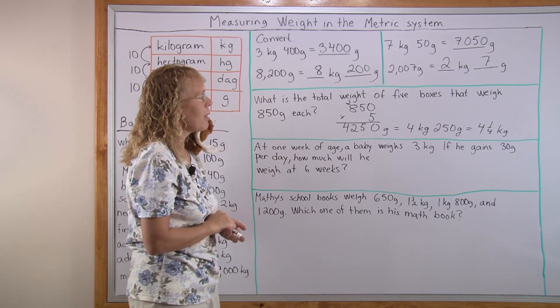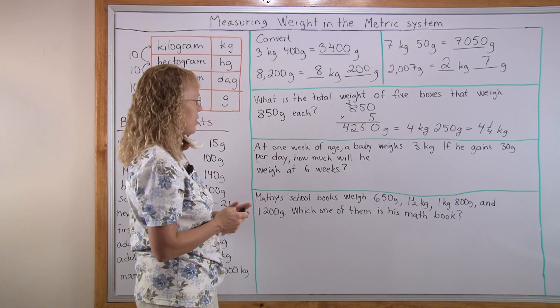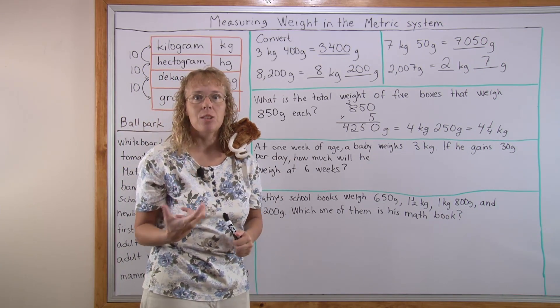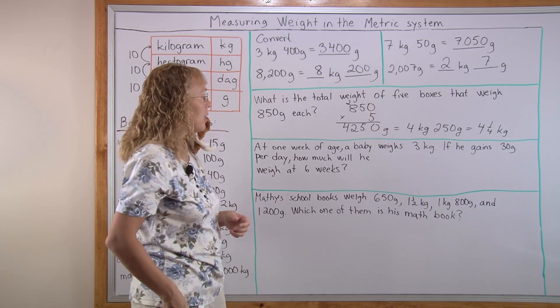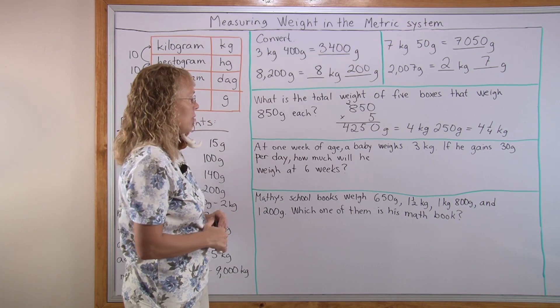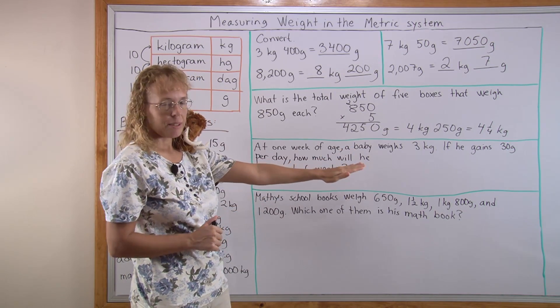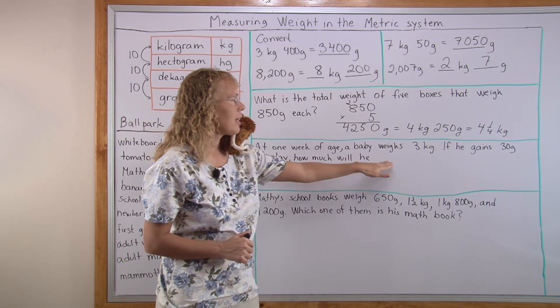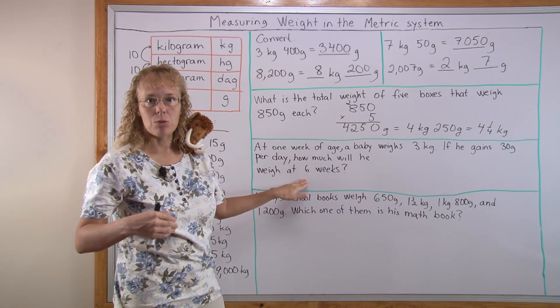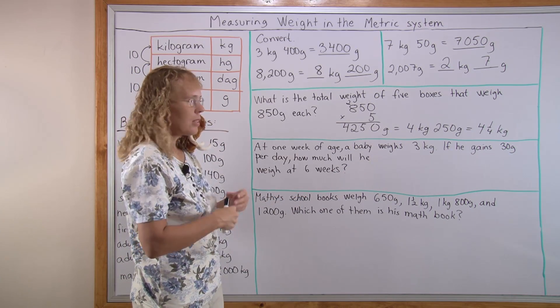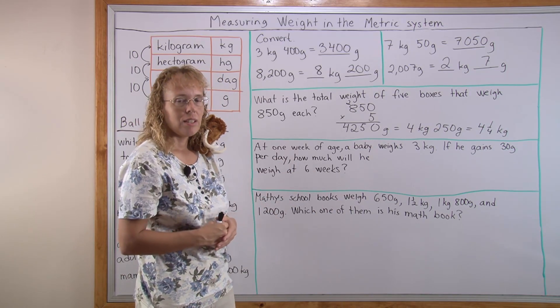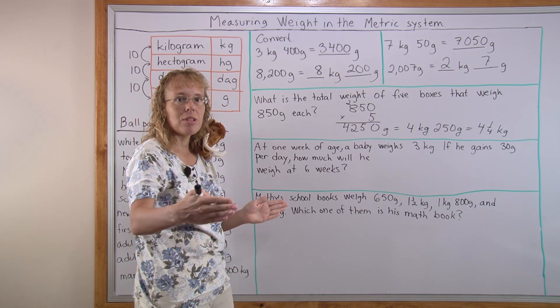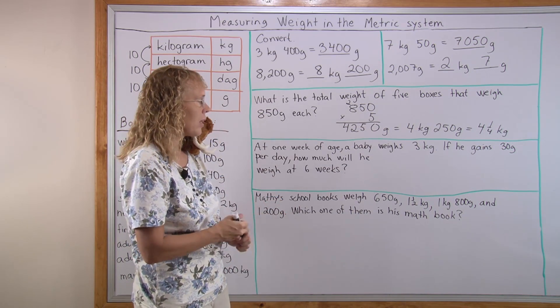At one week of age, a baby weighs 3 kilograms. If he gains 30 grams per day, how much will he weigh at 6 weeks? Now there's lots of numbers in this problem. Maybe you want to read it twice. At one week of age, a baby weighs 3 kilograms. Then later it talks about 6 weeks. So he will get 5 weeks older. This means that the time period we're looking at is 5 weeks.